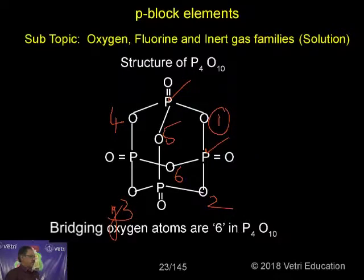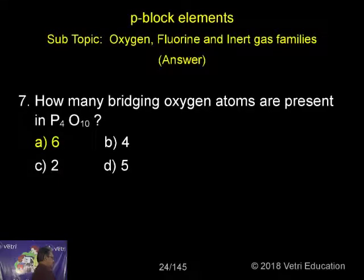Bridging oxygen atoms are 6 in P4O10. This is the pentoxide. So sixth one, the answer is six.